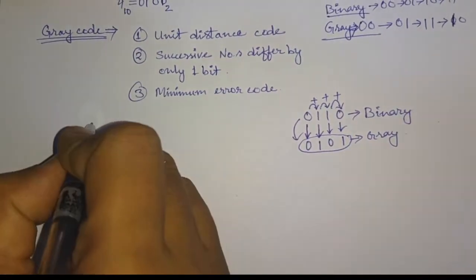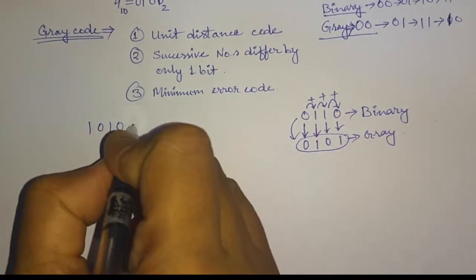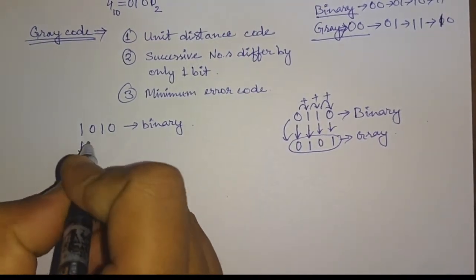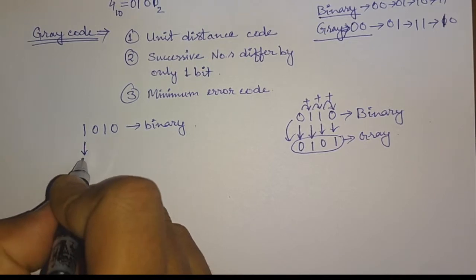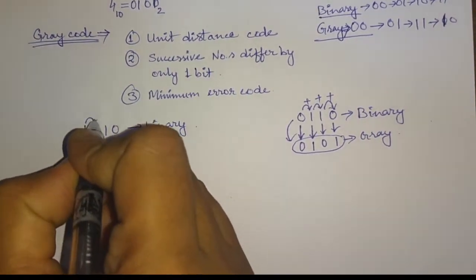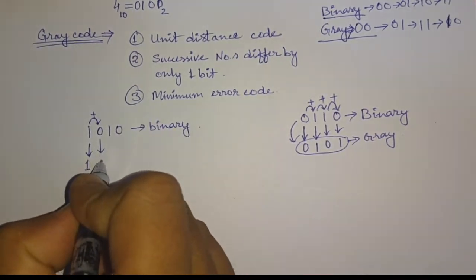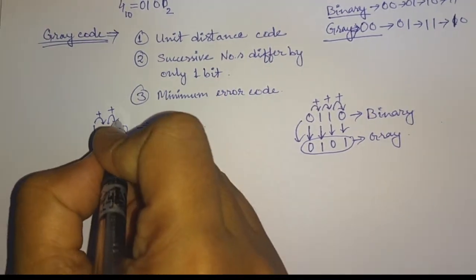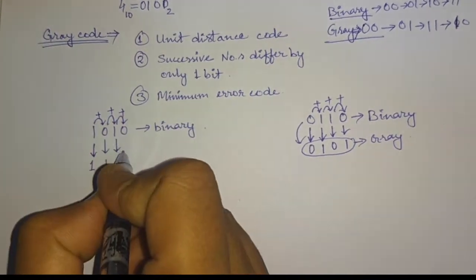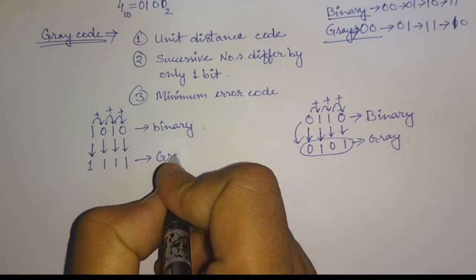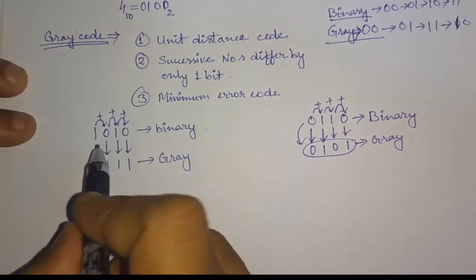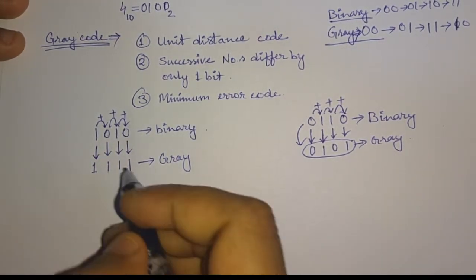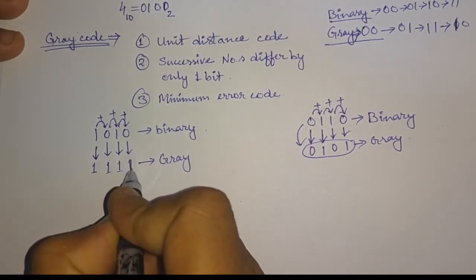Let us consider another number: 1010 as the binary number. For finding the gray code, first the MSB is written as it is: one. Then we add this one to this zero, we get one. When zero is added to this one, we get one. And this one added to this zero gives one. So the gray code representation of binary 1010 is 1111.